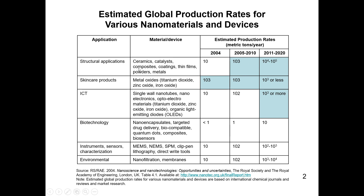We have materials and devices like ceramics, catalysts, composite coatings, thin films, powders, and metals. These kinds of materials were designed and fabricated for structural applications, and their production was estimated in 2004 at 10 metric tons per year.